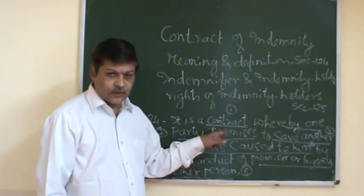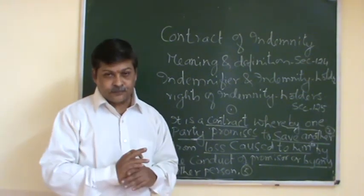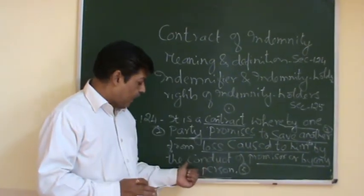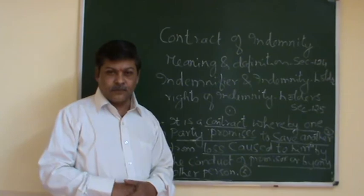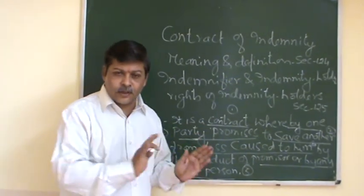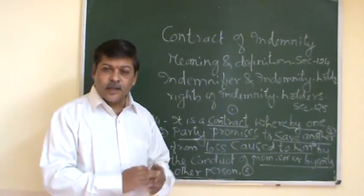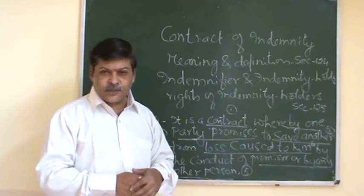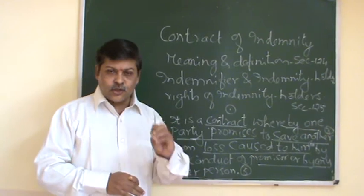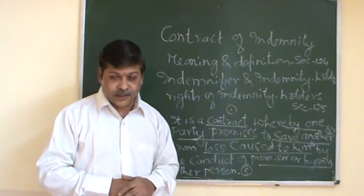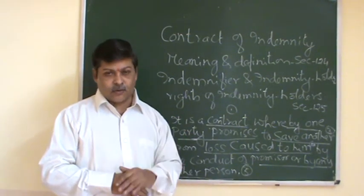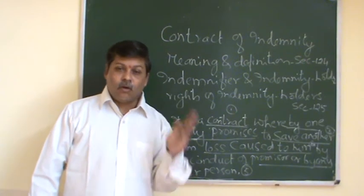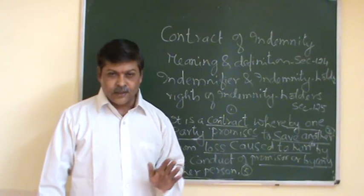First element: it is a contract means it is a valid contract, enforceable in the court of law, and it must fulfill all the essentials mentioned in section 10 of the Indian Contract Act. Second element: whereby one party — usually we have two parties; for example, X — promises to save another, that is Y. X promises to save another from loss caused to him, that is loss caused to Y.